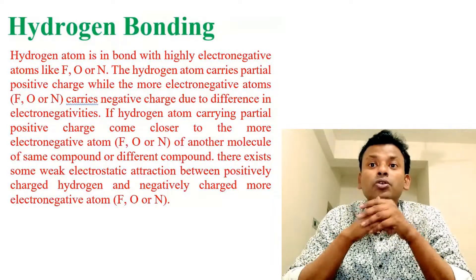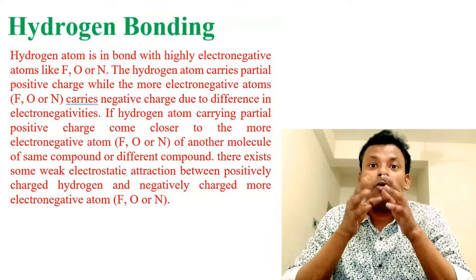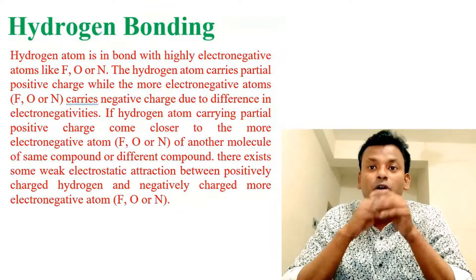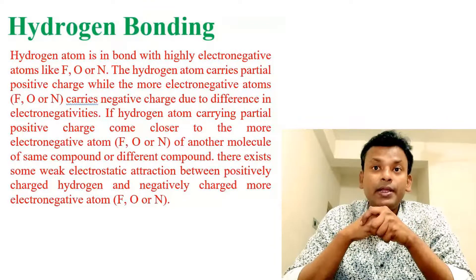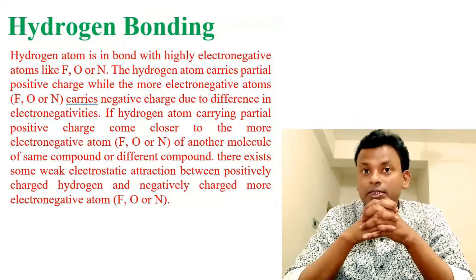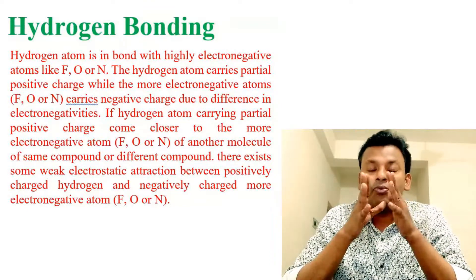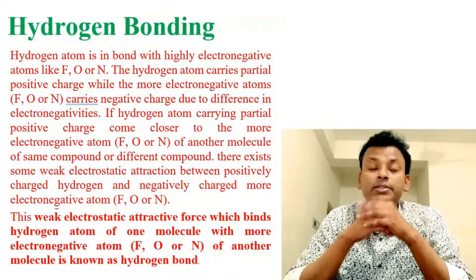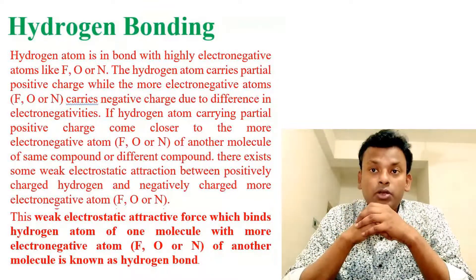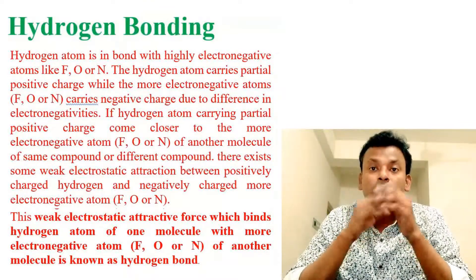If a hydrogen atom carrying a partially positive charge comes closer to a more electronegative atom like fluorine, oxygen, or nitrogen of another molecule of the same or different compound, there exists a weak electrostatic attraction between the positively charged hydrogen and the negatively charged electronegative atom. This weak electrostatic attractive force which binds the hydrogen atom of one molecule with the electronegative atom of another molecule is known as a hydrogen bond.